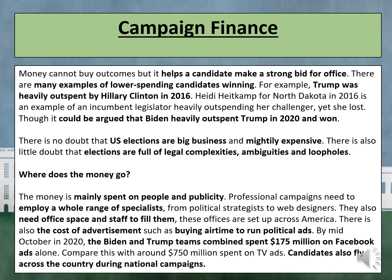Money cannot buy outcomes, but it helps a candidate make a strong bid for office. There are many examples of lower spending candidates winning. For example, Trump was heavily outspent by Hillary Clinton in 2016. Heidi Haikam for North Dakota in 2016 is also an example of an incumbent legislator heavily outspending her challenger, yet she lost. Though it could be argued that Biden heavily outspent Trump in 2020 and won, this would be the opposite example.